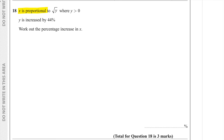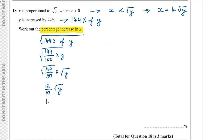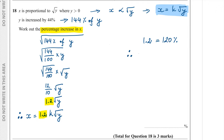Question 18. X is proportional to the square root of y, where y is greater than 0. Replacing the proportionality sign: x equals k times square root of y. y is increased by 44%, meaning we use 144% of y. Replacing y with 1.44y under the square root: square root of 1.44y equals 1.2 times square root of y. So x becomes 1.2k square root of y — representing a 20% increase in x.